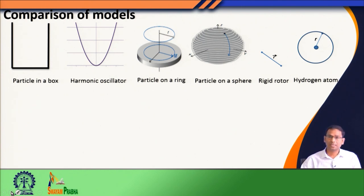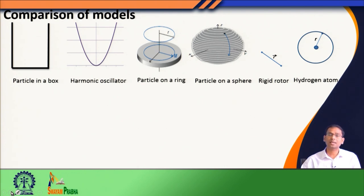Of course, we dealt with this system by considering only one particle and neglected its interaction with other particles, so that problem was simpler than a typical molecule. But in several cases, such as conjugated systems where pi electrons and sigma electrons are separable, we can treat the delocalization of pi electrons effectively with a particle in a box kind of problem.